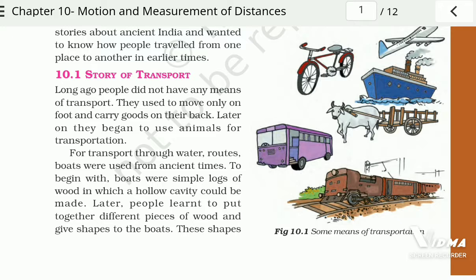Until the beginning of the 19th century, people were still dependent on animals, boats, and ships to transport them from place to place. At that time people relied only on animals, boats, and ships to travel from one place to another.